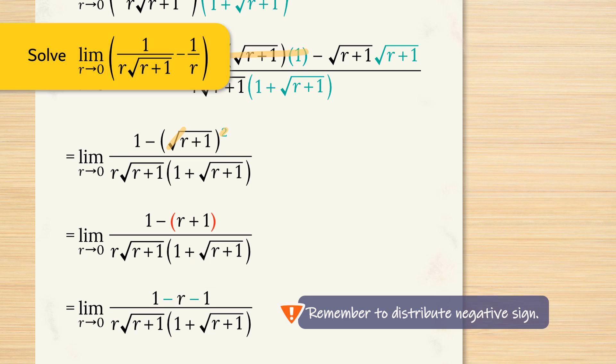If we didn't put those brackets in there and just directly went 1 minus r plus 1, we would get the wrong answer. Remember to distribute the negative sign. And now we simplify.